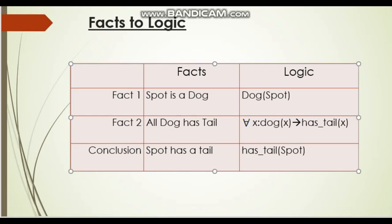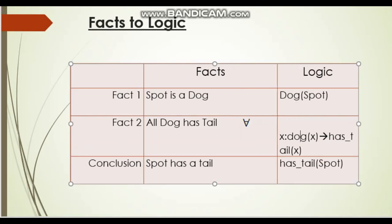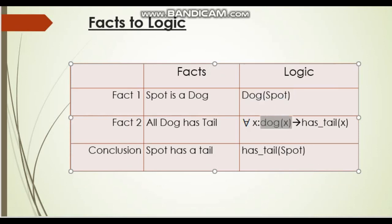If these two facts are true — dog(Spot) and for all X dog(X) implies has_tail(X) — then we can conclude that Spot has a tail, since Spot is also a dog. We replace variable X with Spot and get has_tail(Spot). This is how from some facts we can derive new facts.